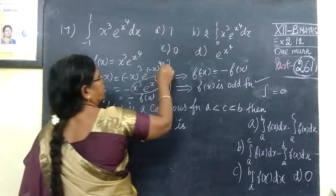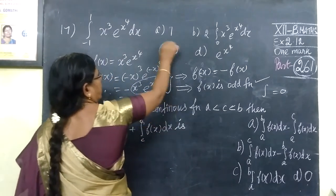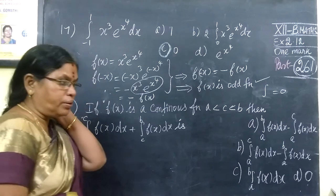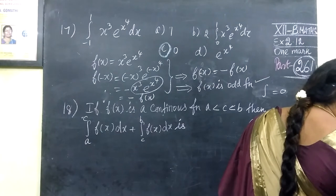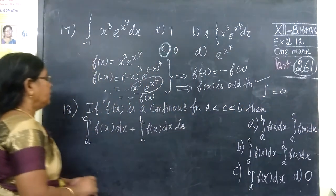So here is the option. This is the odd function. If you have the odd function, the answer is twice zero. This is question number 17. 0 is correct. That is correct.